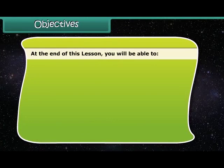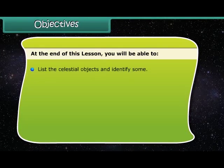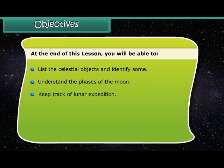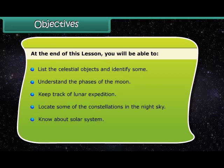At the end of this lesson, you will be able to list the celestial objects and identify some, understand the phases of the Moon, keep track of lunar expedition, locate some of the constellations in the night sky, know about solar system, and explain the role of artificial satellites.